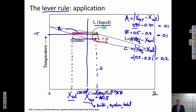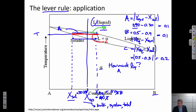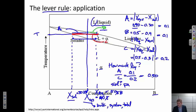Applying the lever rule, if we ask how much liquid is present, we take the fraction A over C: 0.1 over 0.2, which gives 0.5 — so 50 percent mass fraction of the system is liquid. For the solid, that's given by B over C: also 0.1 over 0.2 equals 0.5. So for these numbers, there is 0.5 mass fraction liquid and 0.5 mass fraction solid phase alpha present.